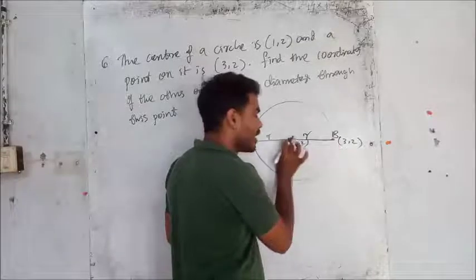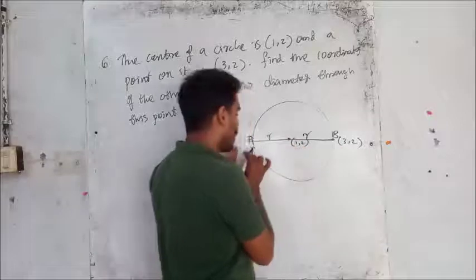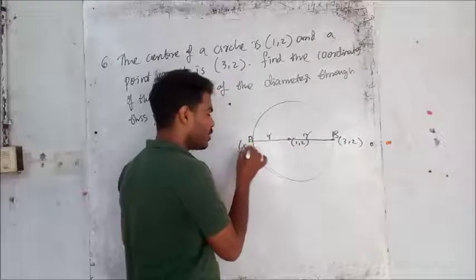This is a shape. There is (1,2). This one is equal to (1,2). This is (3,2).